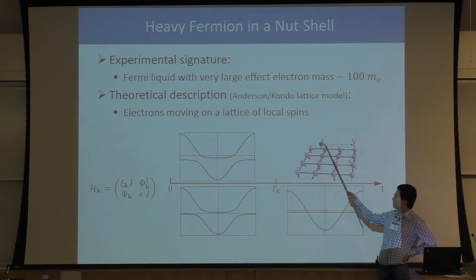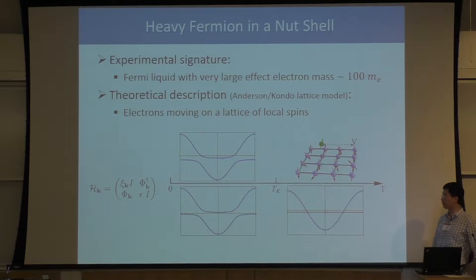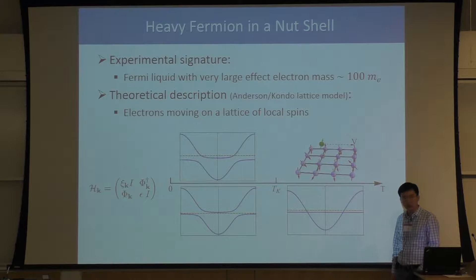On top of this spin lattice, we have our second type of electron, the second electron species. This second type of electron are our conducting electrons — they can move on top of this lattice, giving us a conducting band. If we draw the band structure, it's represented by a blue line with dispersion. This localized electron also gives us a band, but this band is totally flat because this electron cannot move — there is no dispersion.